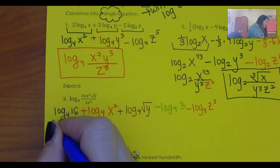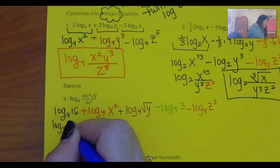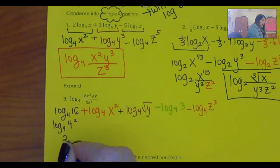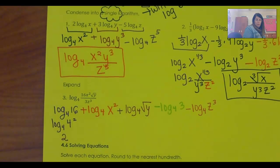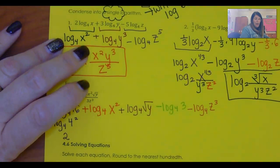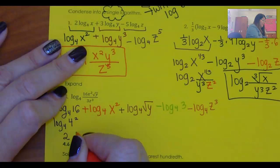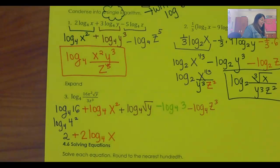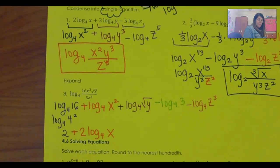So I can write this as log base 4 of 4 squared, which by the way, that part turns into 2. Now when I have an exponent, it comes out in front as a coefficient, so plus 2 log base 4 of x, right?